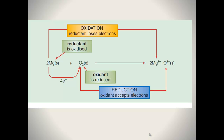And here's another flow chart using the same reaction. The reductant is oxidized; the oxidant is reduced. But more importantly, it is the reductant that's causing the reduction of oxygen, and it is the oxidant that's causing the oxidation of magnesium. So: oxidation — the reductant loses electrons. Reduction — the oxidant accepts electrons.